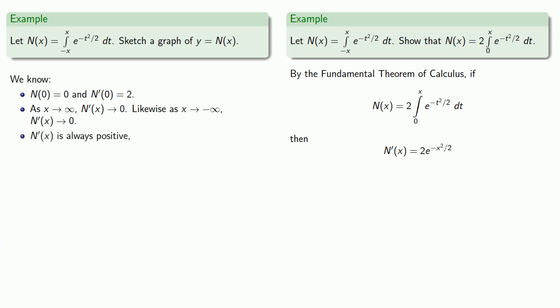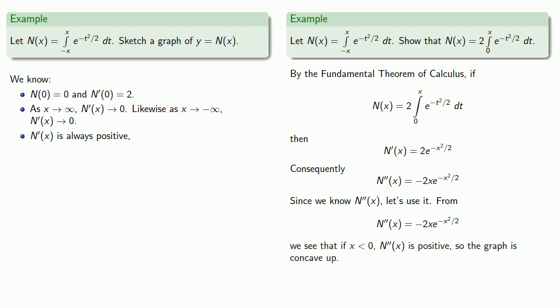We can also find the second derivative. And since we know the second derivative, we can use it. So from our second derivative, we see that if x is less than 0, our second derivative is going to be positive, so the graph will be concave up.